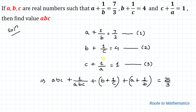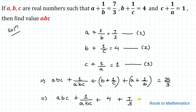Now we substitute known values. From Equation 2, b + 1/c = 4, and from Equation 1, a + 1/b = 7/3. Substituting these into our expression gives: abc + 1/(abc) + 4 + 7/3 = 25/3.